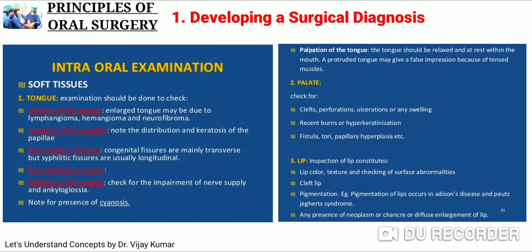In intraoral examination, we check soft tissues: for the tongue, we check volume, integrity of papillae, cracks or fissures, swelling or ulcers, and mobility. For the palate, we check clefts, perforations, ulcerations, swelling, burns, hyperkeratinization, fistula, tori, and papillary hyperplasia. For the lips, we check competency, color, texture, surface abnormalities, cleft lip, pigmentation, neoplasm or chancre, and diffuse enlargement.